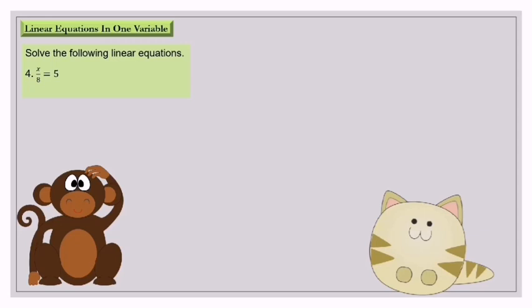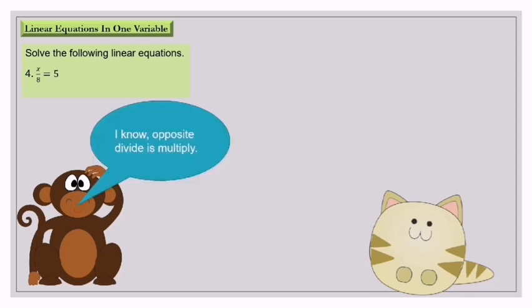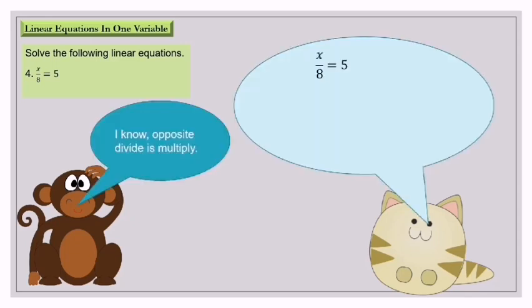Question number 4: s over 8 equals 5. The opposite of divide is multiply. So this part is divide. Move to the right hand side, it will become multiply. s equals 5 multiplied by 8. s equals 40.